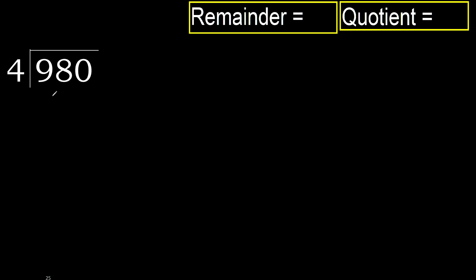980 divided by 4. 9 is not less, therefore with 9: 4 multiply by which number is nearest to 9 but not greater? 4 multiply by 3 is 12 — greater. 4 multiply by 2 is 8 — not greater. Subtract: 9 minus 8 is 1.